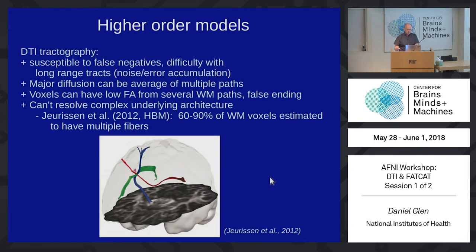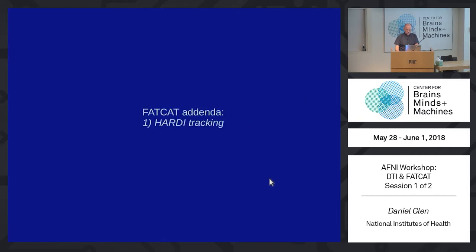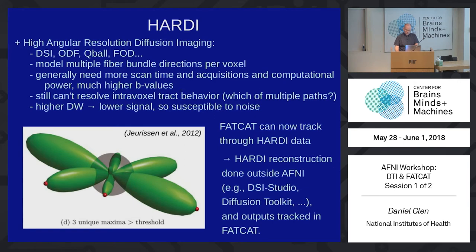We can do this for HARDI images too. These are datasets modeled where the diffusion tensor is calculated with multiple ellipsoid kinds of shapes that give us the direction in one, two, three, or four ways — so you can get higher orders of directions. Fat Cat can take care of that too, though we don't do HARDI tensor estimation ourselves — this is from DSI Studio or Diffusion Toolkit, and I think MRtrix also does this.